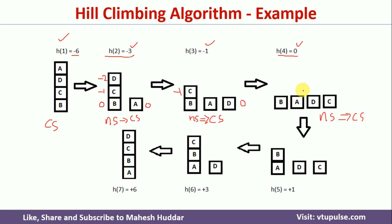Once this becomes the current state, we apply another operator: we place block B on top of block A. This is the new state. It is not a goal state. Evaluating it: A, D, and C have value 0; for B, its support structure A is correctly placed, giving plus 1. The total heuristic value is 1, which is better than the current state value of 0, so this new state becomes the current state.